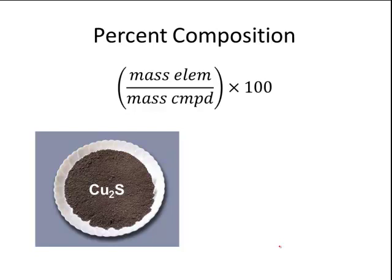We can also calculate the percent composition of different elements in a compound. We can do this by taking the mass of each element and dividing it by the mass of the compound. And then take that answer times 100 to make it a percentage. So to calculate the percent of copper and the percent of sulfur in copper sulfide, the first thing I need to know is the mass of the copper sulfide. So in your calculator, take the mass of copper times 2 plus the mass of sulfur to get a molar mass of 159.16 grams per mole. That's the molar mass of copper sulfide.